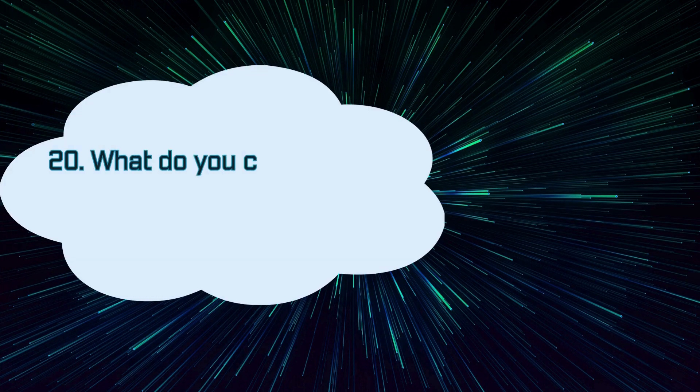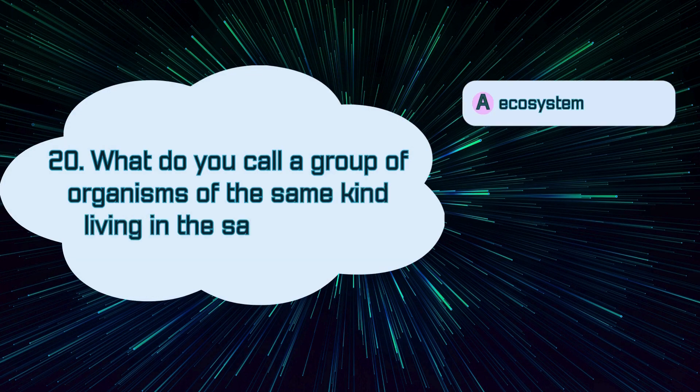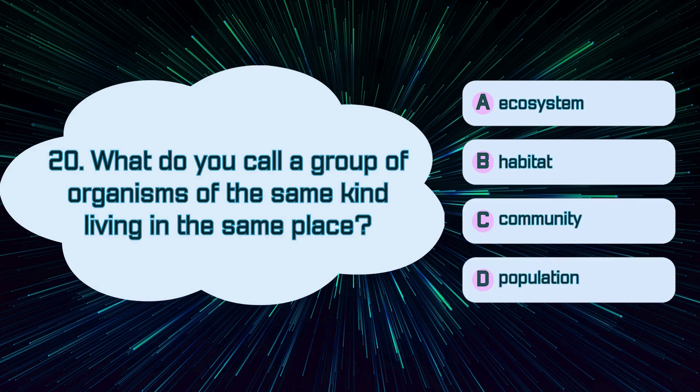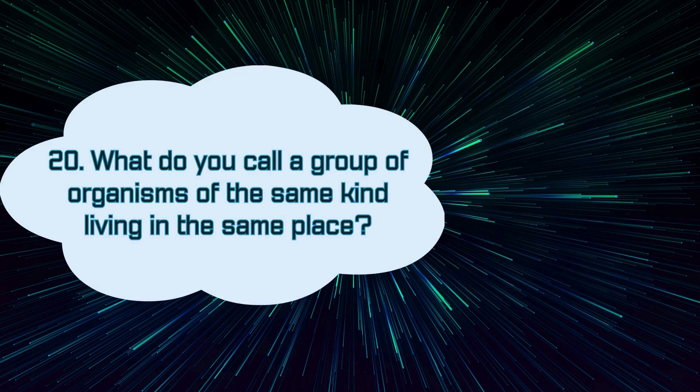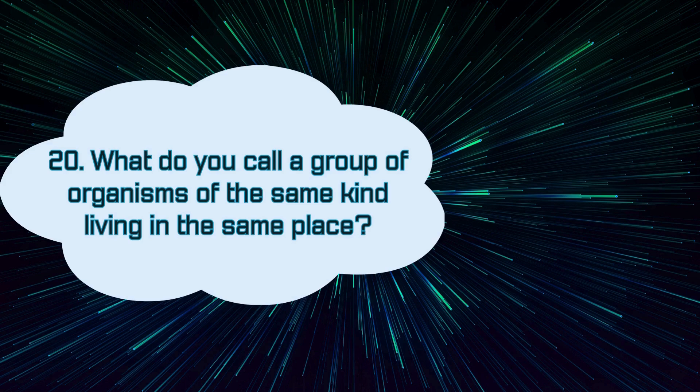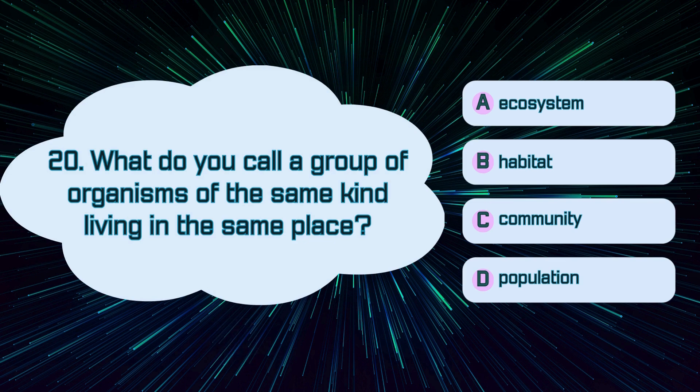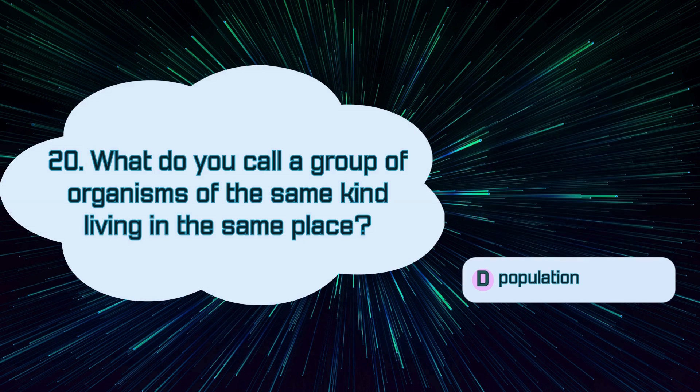Number 20. What do you call a group of organisms of the same kind living in the same place? A. Ecosystem, B. Habitat, C. Community, D. Population. The correct answer is D. Population.